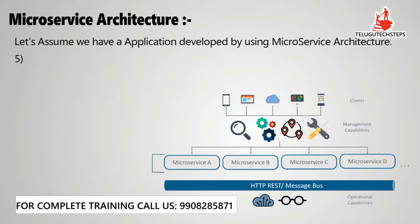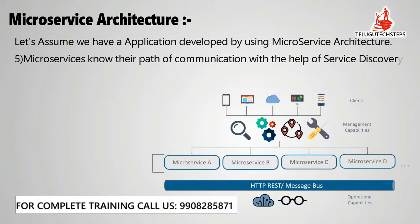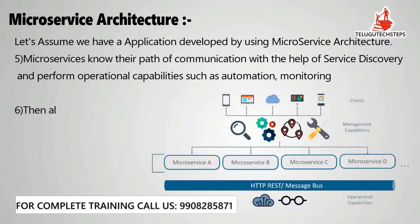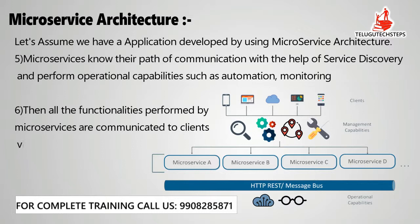Each microservice also has operational capabilities such as automation and monitoring. If there are bugs in a microservice, you can replace that microservice with another without affecting others, by using operational capabilities like automation and monitoring. All functionalities performed by microservices are communicated to the client by using API gateways. Microservices communicate with clients through RESTful web services via API gateways.